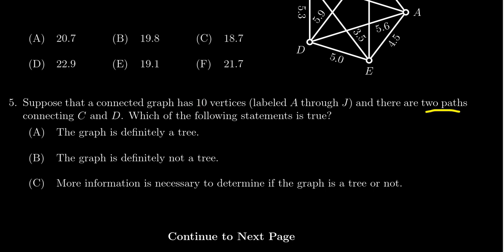What we are told is there are two distinct paths that connect C and D together. That's in violation of the single path property, which every tree has. The single path property says given any pair of vertices such as C and D, there must be a unique path between them.